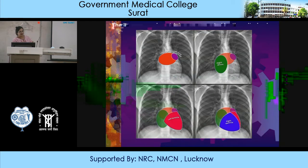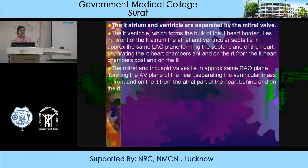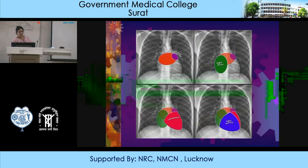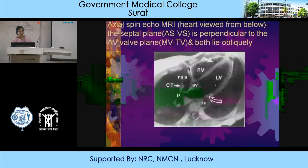The mitral and tricuspid valves lie in approximately the same RAO plane, forming the AV plane of the heart, separating the ventricular mass in front and on the left from the atrial part behind and on the right. The interatrial and ventricular septa are perpendicular to the mitral and tricuspid valves, and both lie obliquely.